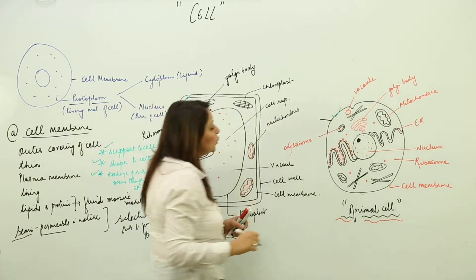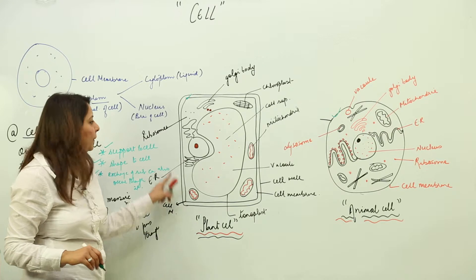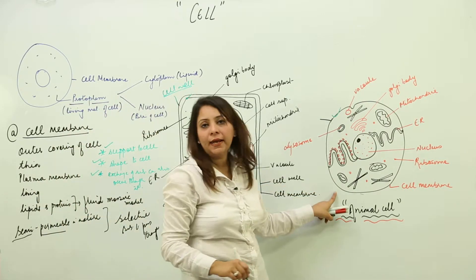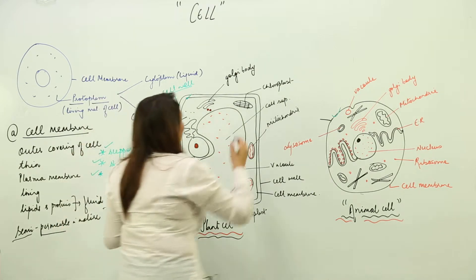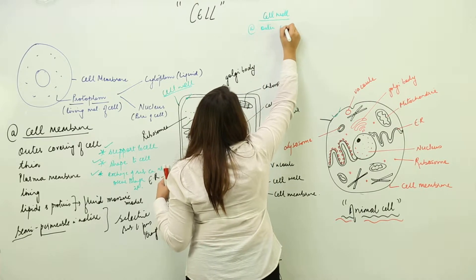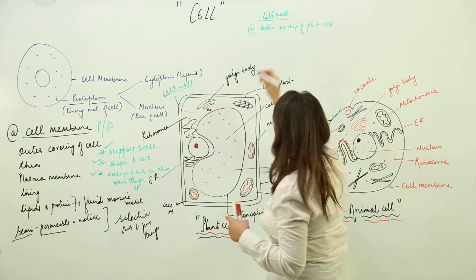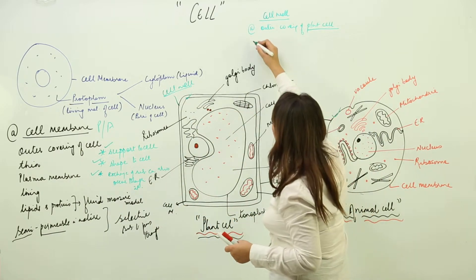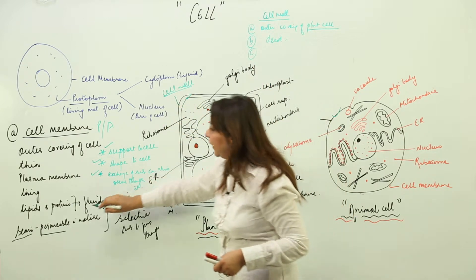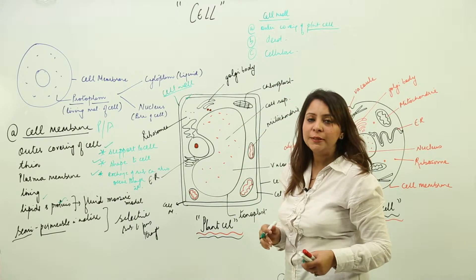In the plant cell, outer to the cell membrane there is one more membrane called the cell wall, but no such wall is present in the animal cell. The cell wall is the outer covering of plant cells only. It is dead in nature and mostly made up of cellulose.